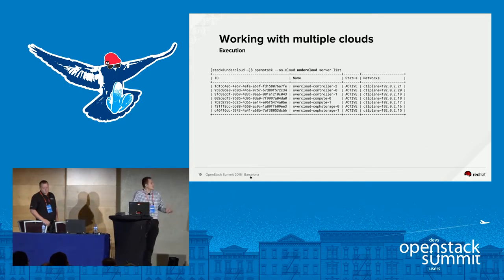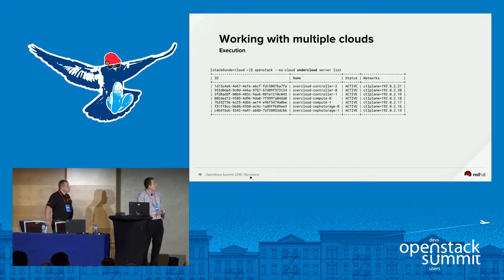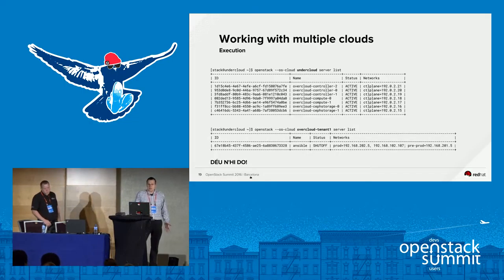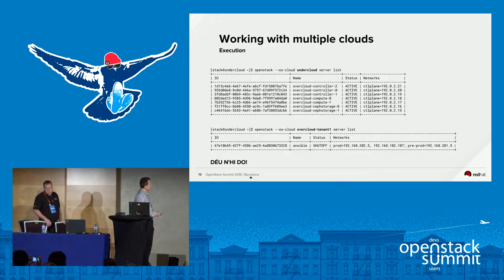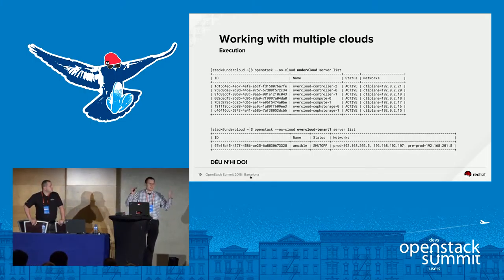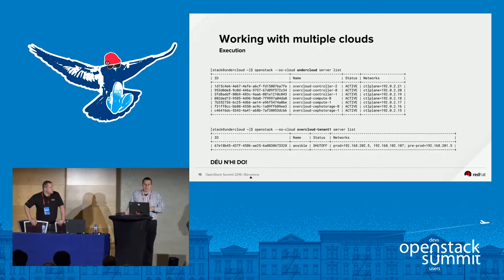For execution, all you have to do is add the --os-cloud parameter with the name of the cloud you want to execute against. If I type 'server list' against the undercloud, it shows instances running under the undercloud. If I do it with the overcloud, I get output from another cloud. Definitely a big improvement from a usability perspective.